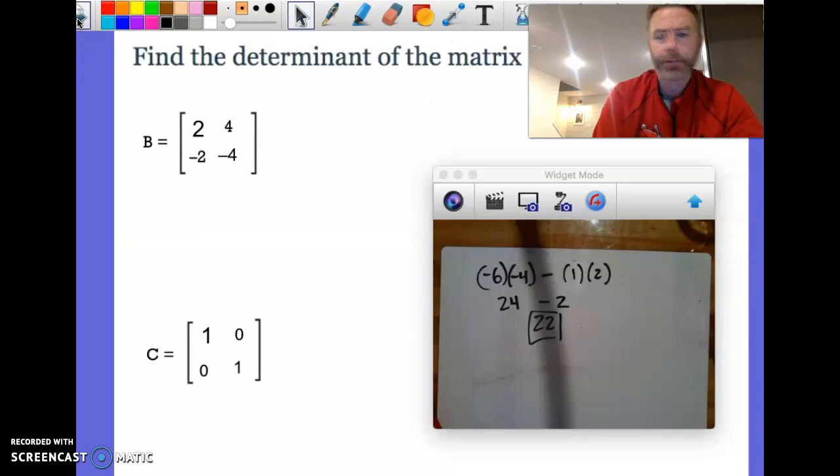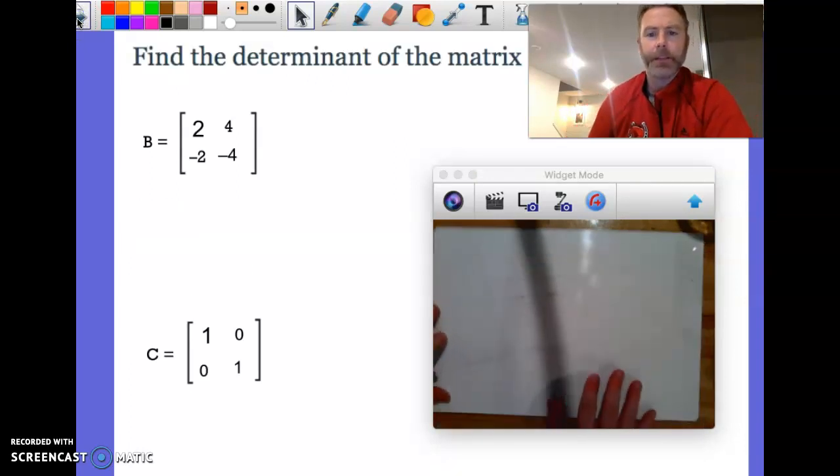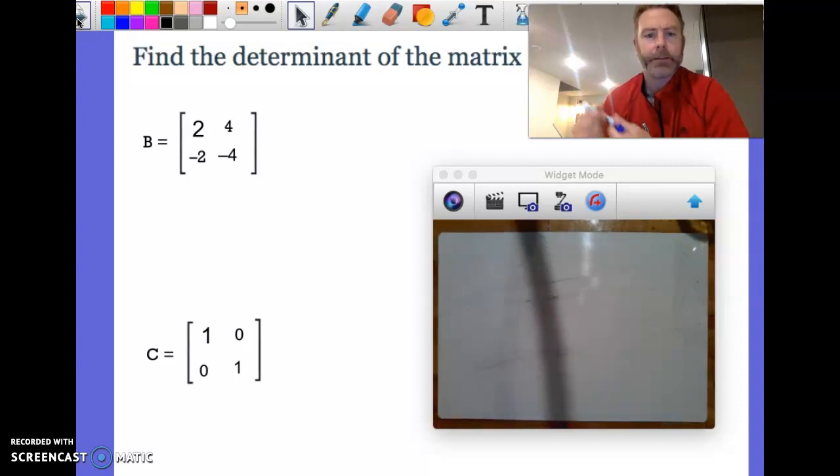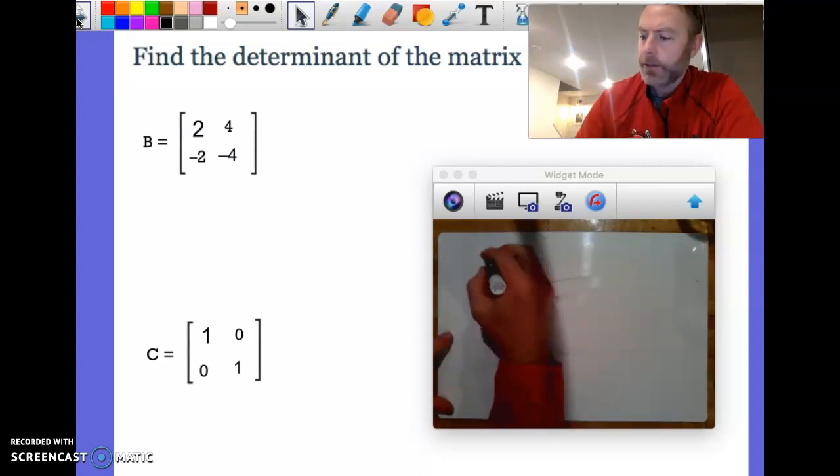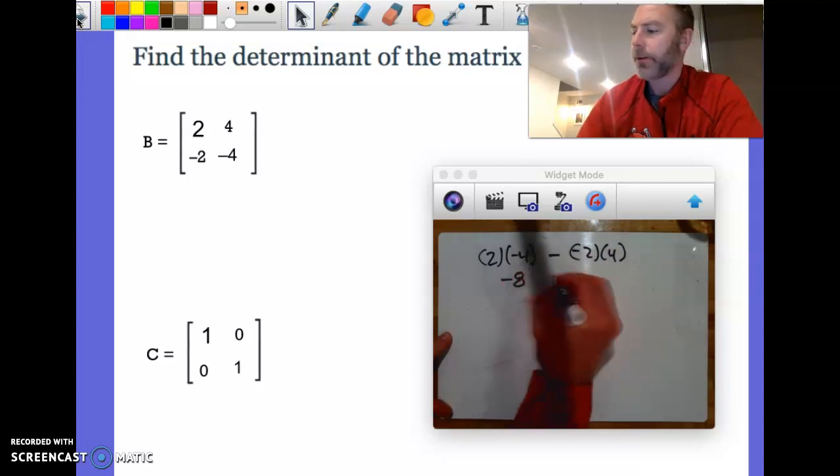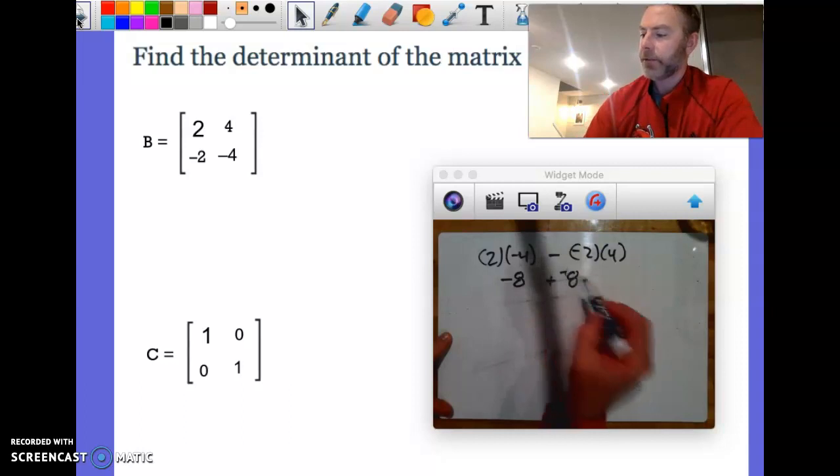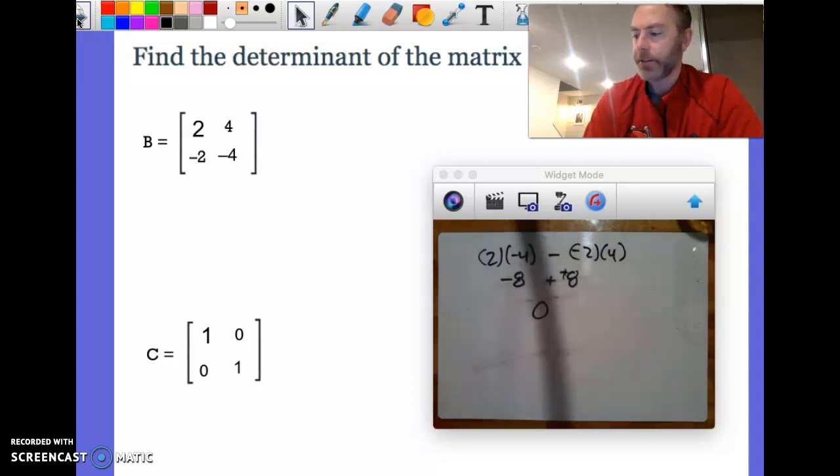I got a couple more examples I want to show you. Determinant of B here, letter B. 2 times negative 4 minus negative 2 times positive 4. So just be careful with our negative signs here. This is a double negative. This determinant is zero.